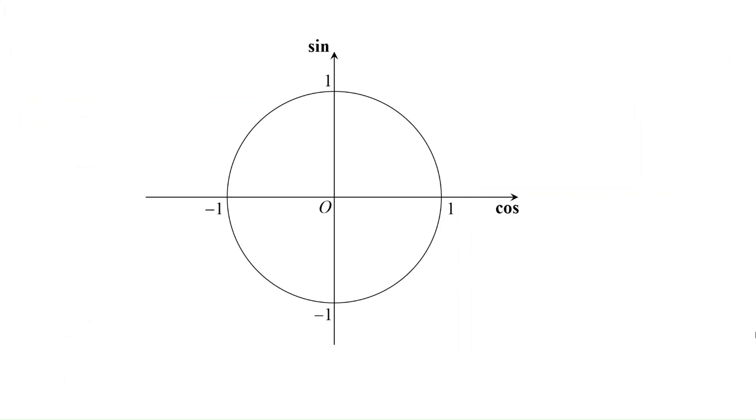Let us consider this unit circle. In a previous lesson, we have seen that if we consider a point p on the circle forming an angle of theta with the positive x-axis, then the coordinates of p would be cosine theta for its abscissa and sine theta for its ordinate.